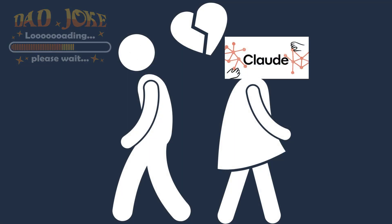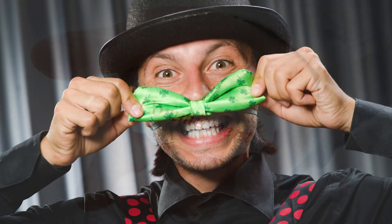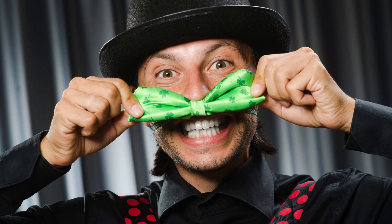By the way, do you know why the user broke up with Claude AI? Because every time they asked about relationships, Claude kept saying, "I'm just not programmed for commitment." Just kidding — just had to add a little humour to lighten things up.